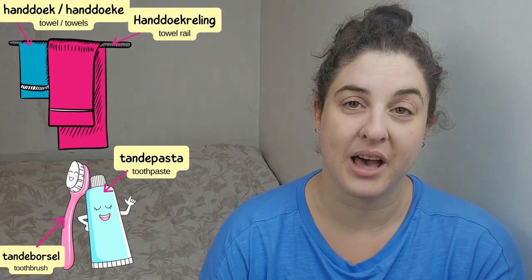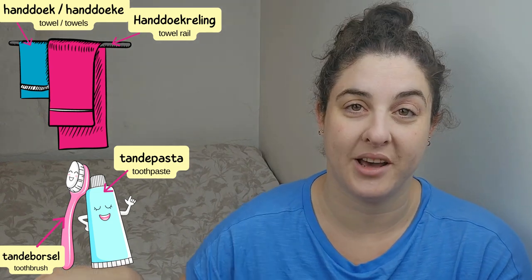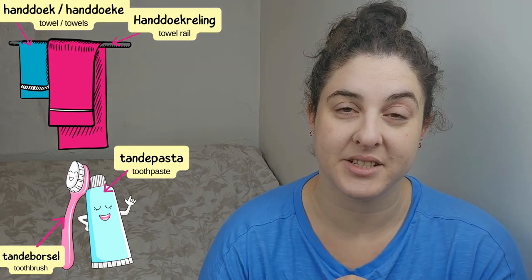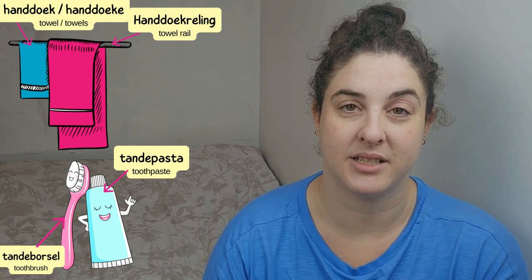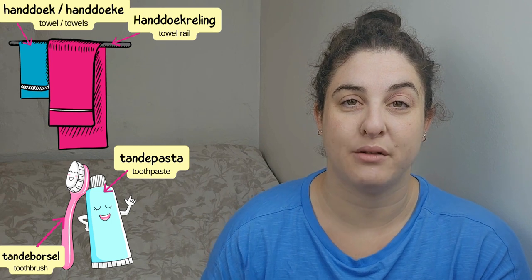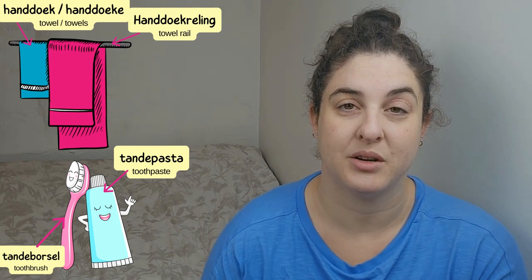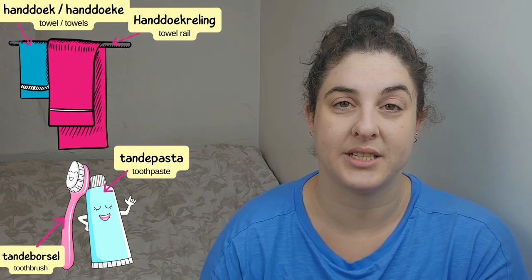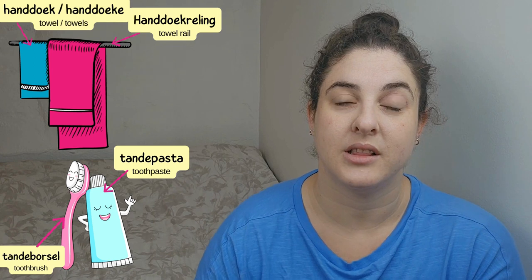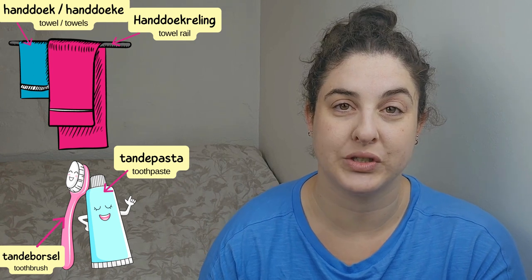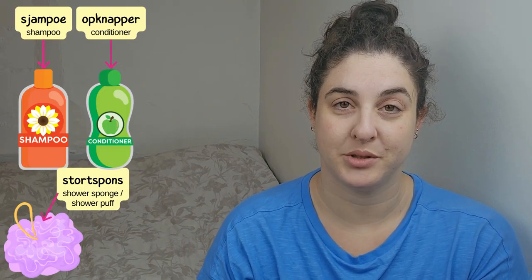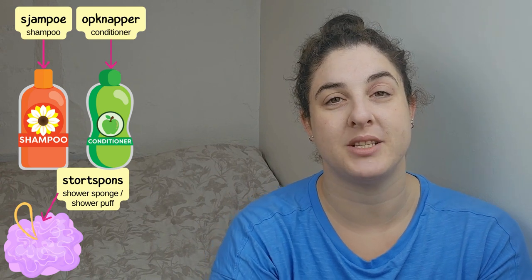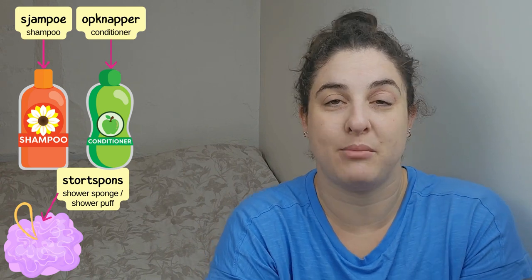'Handdoek' — one towel. 'Handdoeke' — many towels. Then you have the towel rail that the towels hang from in the bathroom, and that is 'handdoekrailing' — one word. Then we have 'tandepasta' — toothpaste — and 'tandeborsel' — toothbrush.